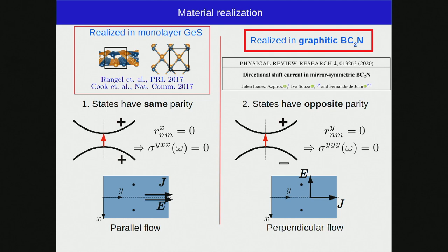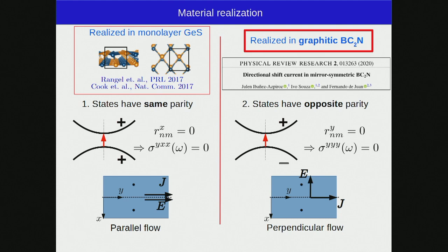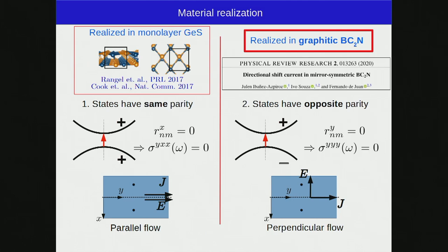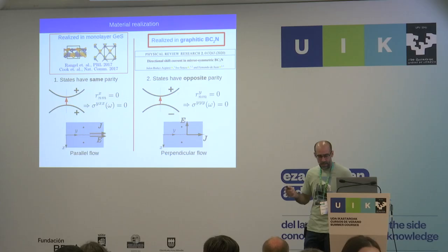Retrospectively, monolayer germanium sulfide — shown earlier as an example of enhanced 2D shift current — falls into the same-parity category, where the perpendicular configuration is forbidden instead. The BC2N case is more exotic: it gives current with the applied field perpendicular to the current direction. It's not a Hall effect since it's not intrinsically perpendicular — only the X component of the field produces current along Y; if you tilt the field, you just get that component's contribution.